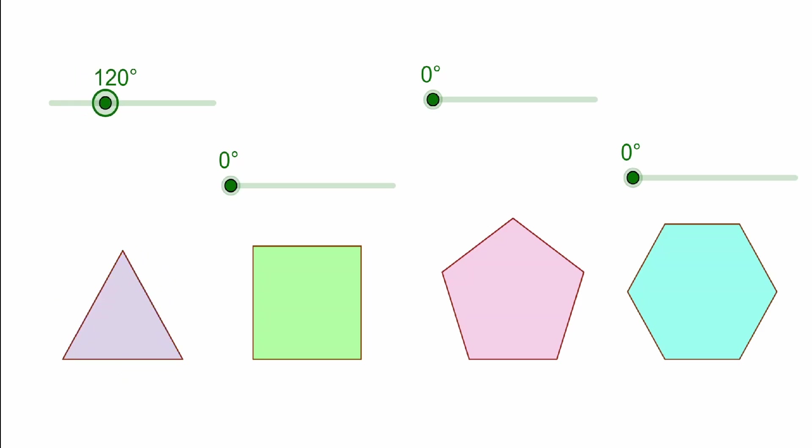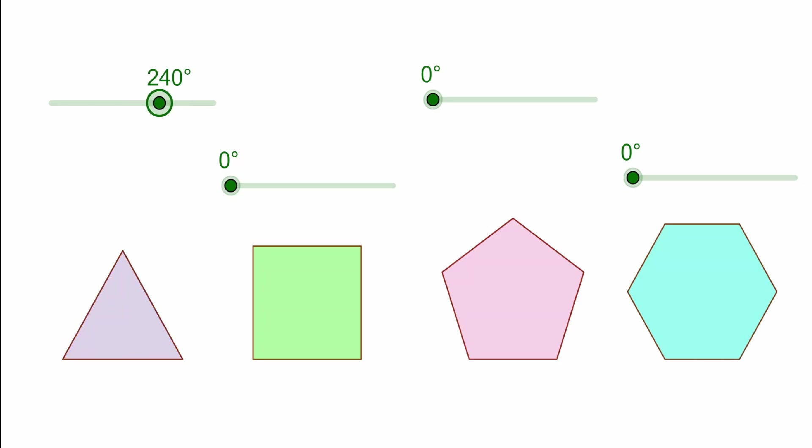Notice that when we hit 120 degrees, the figure rotated into itself. Therefore, we can say that 120 degrees is the angle of rotational symmetry for this triangle. That's not the only angle. When I keep scrolling to the right, also at 240 degrees, the triangle rotated into itself. 240 degrees can also be said as another angle of rotational symmetry.